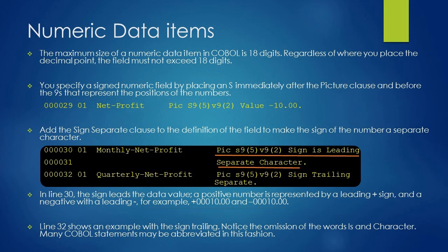For example, +00010.0 and -00010.00. Line 32 shows an example with the sign trailing. Notice the omission of the words IS and CHARACTER.